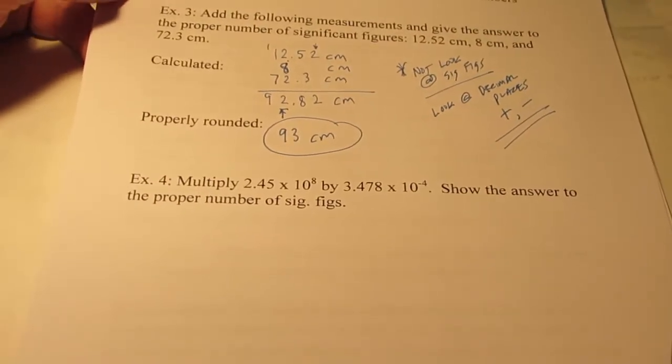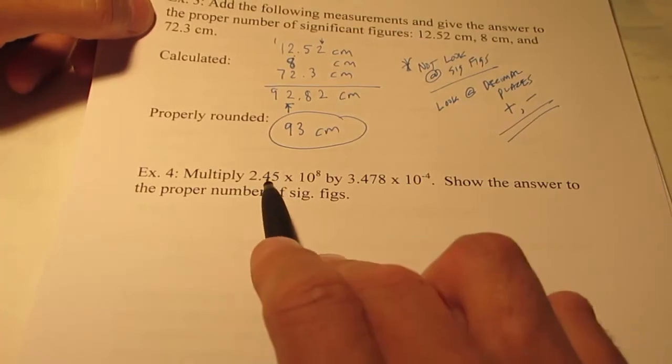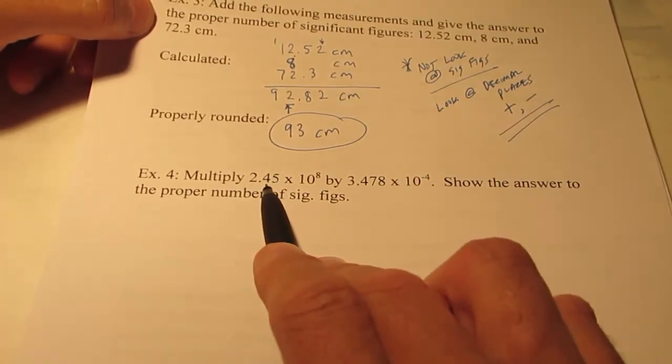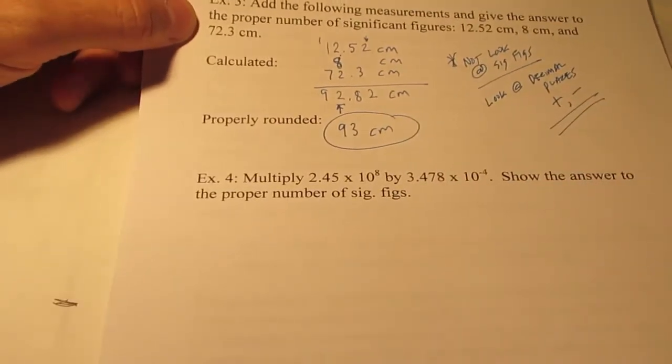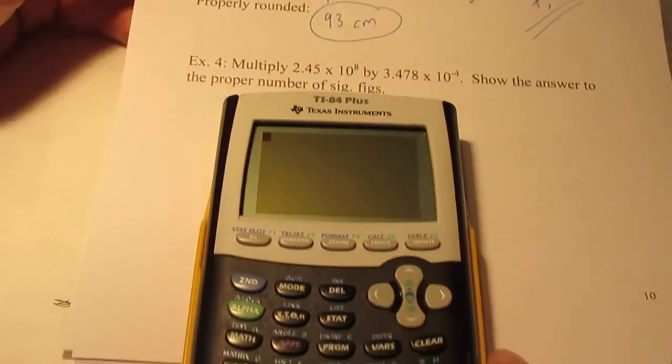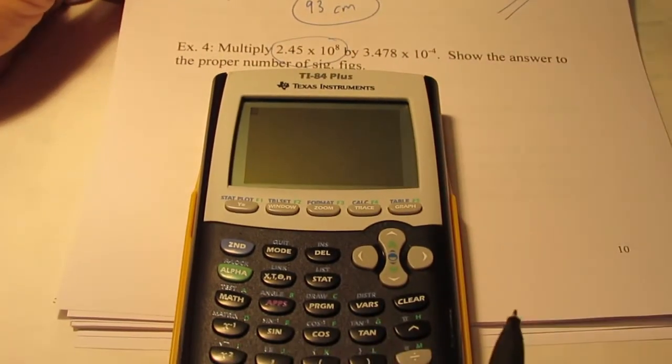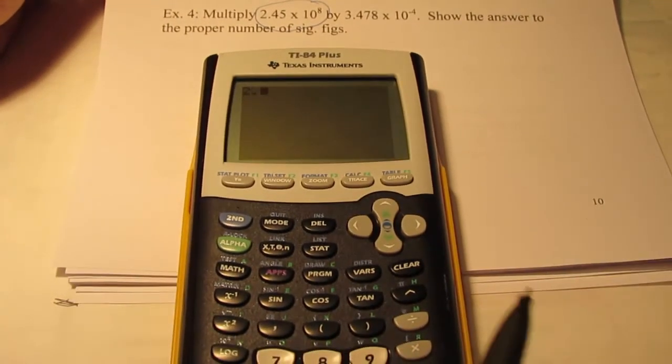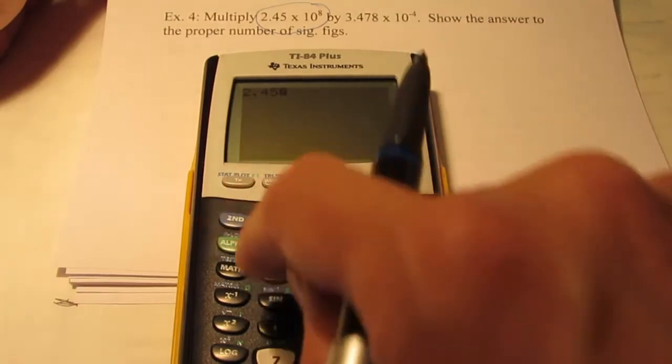Alright. What if we have numbers expressed in scientific form? Let's try this. We're going to multiply 2.45 times 10 to the eighth by 3.478 times 10 to the negative fourth. So let's go ahead and put that in our calculator. I'll show you guys how to use your calculators right now if you're unfamiliar. To enter this value into your calculator, we press 2.45.